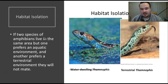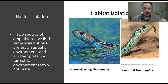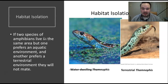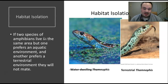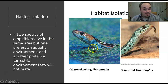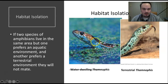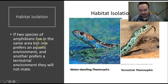The final prezygotic barrier is habitat isolation. Two species of amphibian might live in the same general area, but if one prefers an aquatic environment and another prefers a terrestrial environment, they will not mate. This applies to the Thamnophis snakes as well — one lives in the water and the other on land. These two will never breed together and become their own separate species: the aquatic water dweller and the terrestrial version.